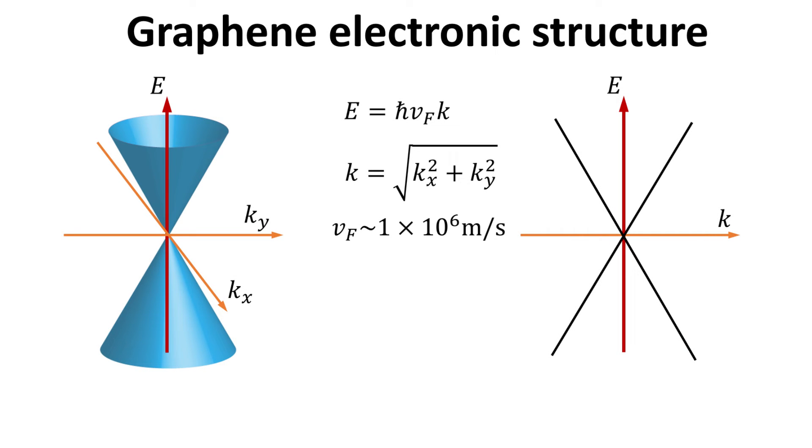The energy has a linear dispersion relation written as shown, where h-bar is the Planck constant, and V-f is the electron Fermi velocity, which is about 300 times smaller than the speed of light in free space. We can simply plot the energy dispersion in terms of the magnitude of the electron wave vector as shown on the right.